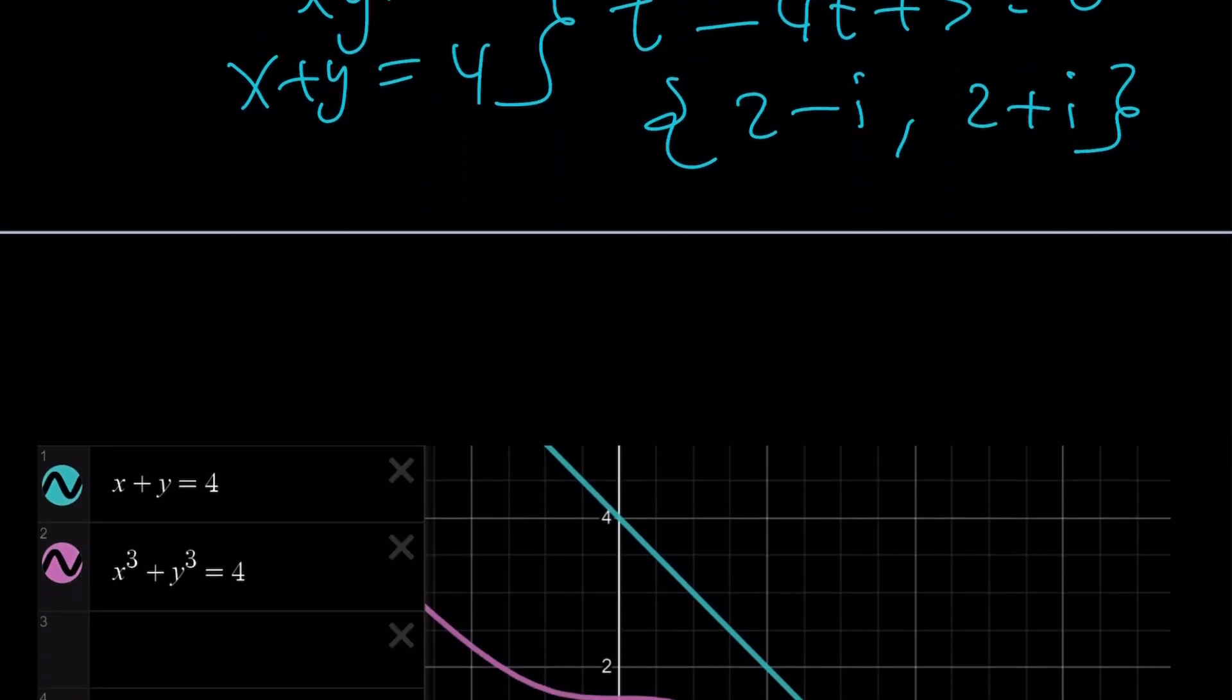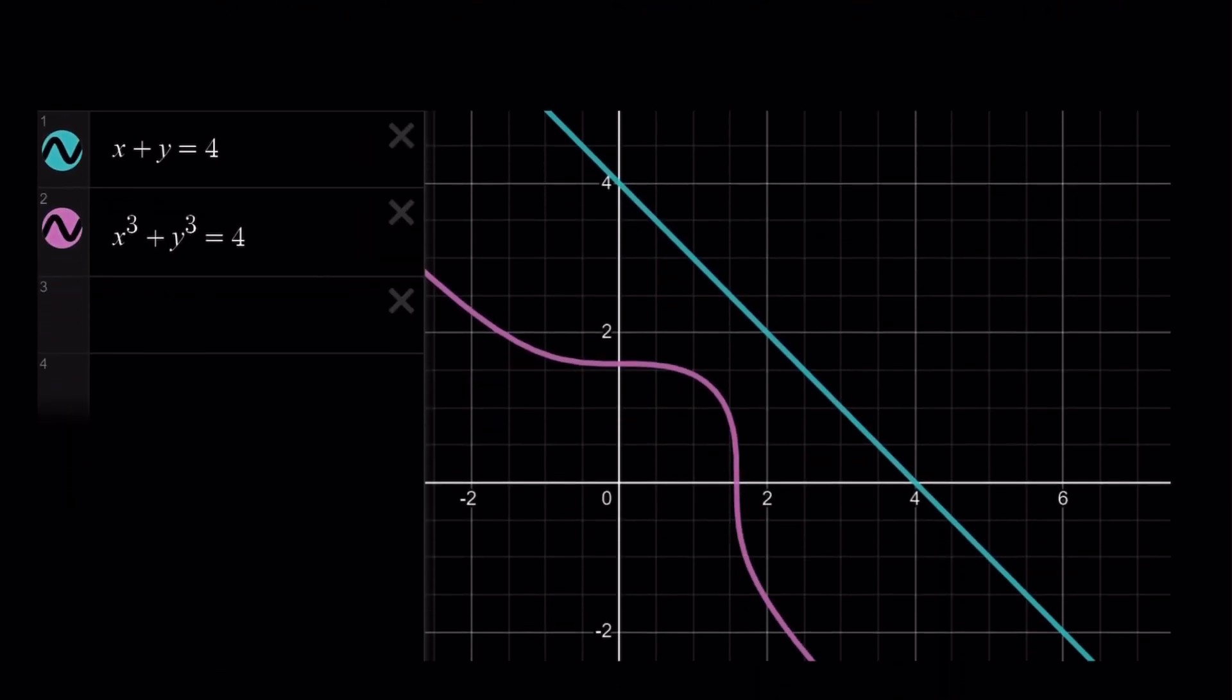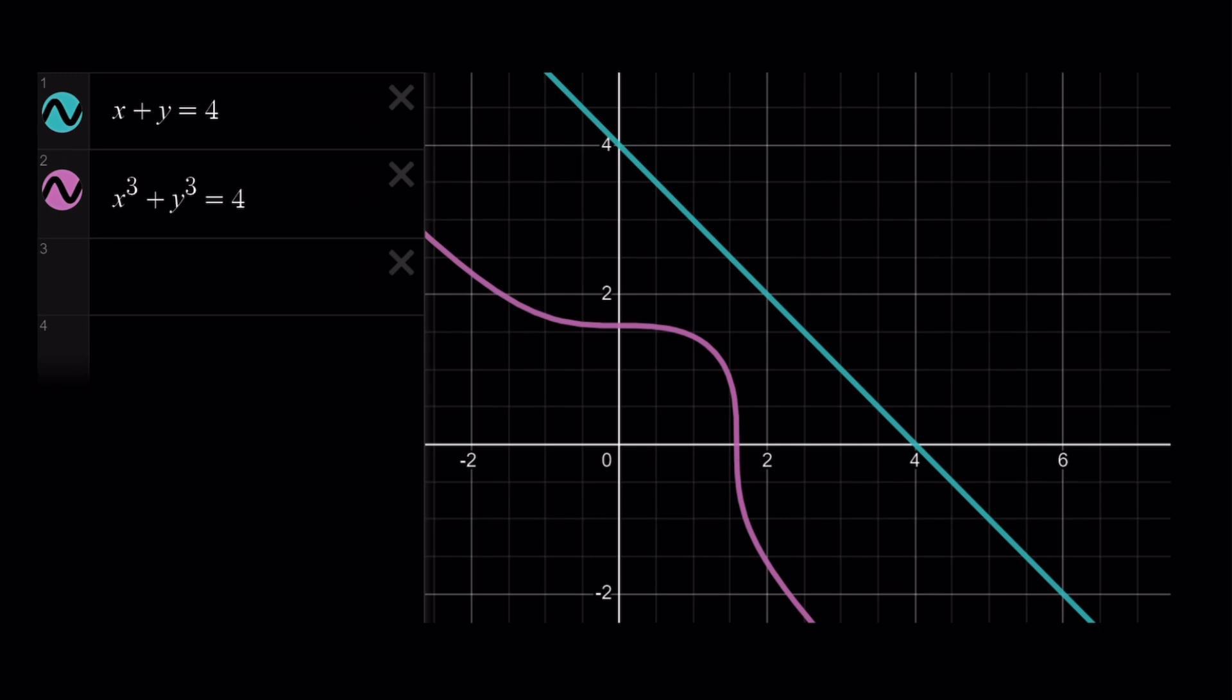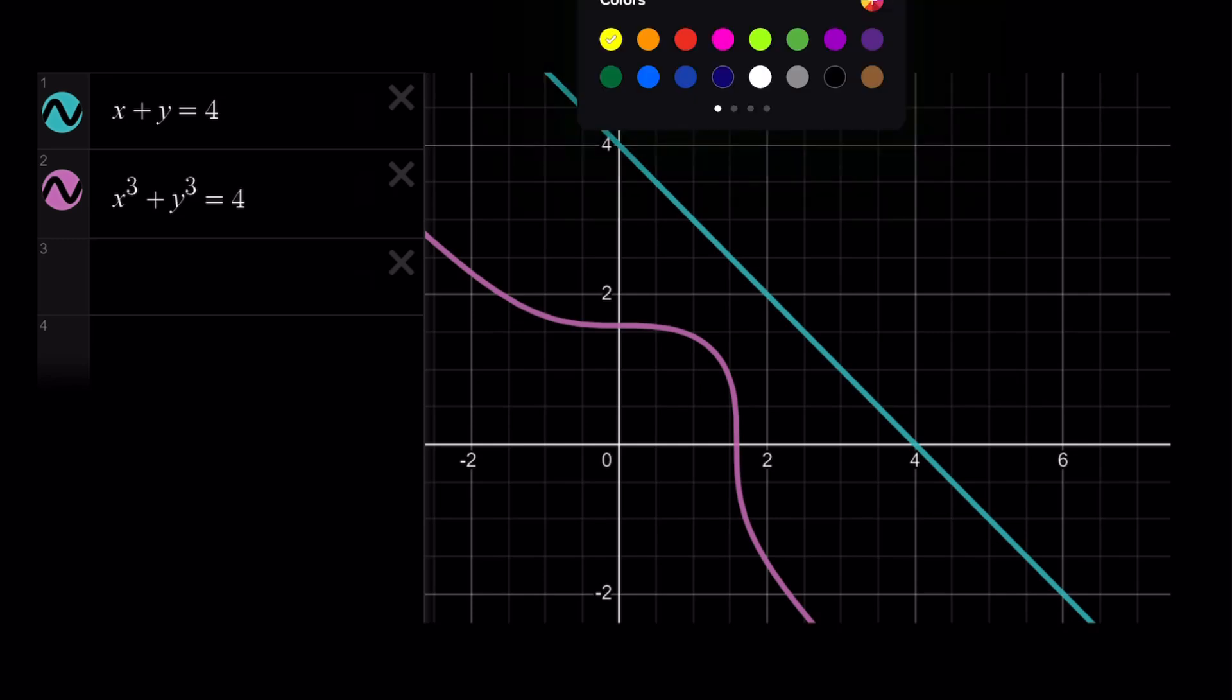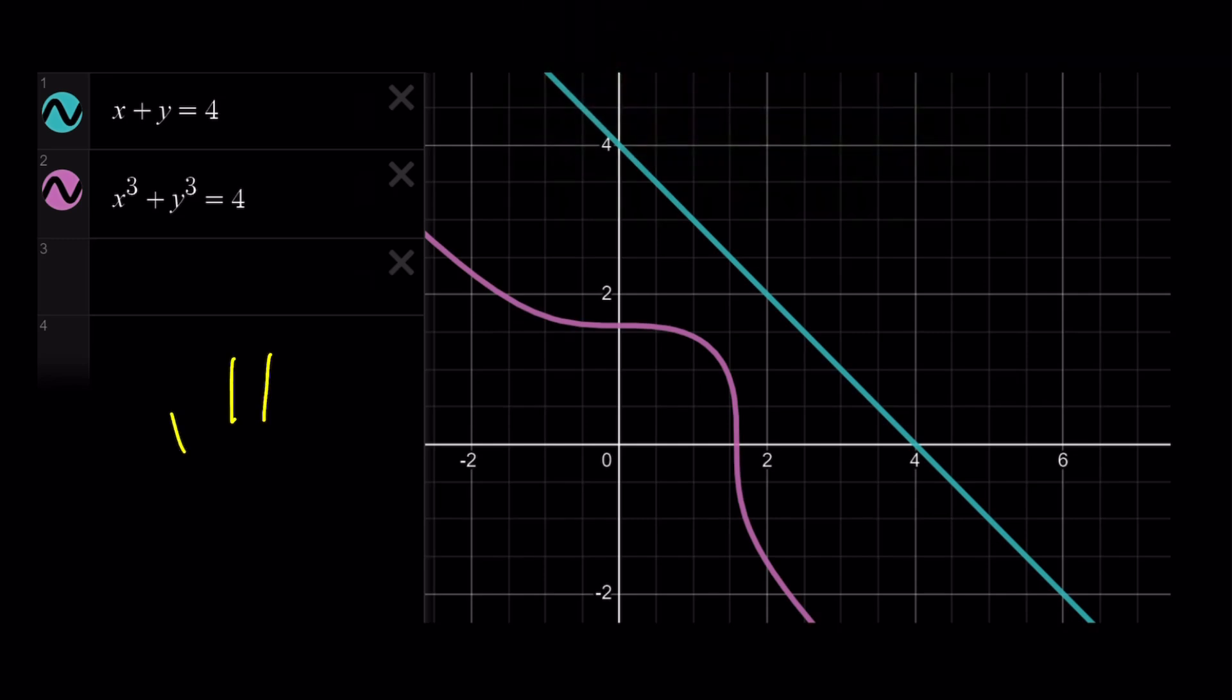And now, let's take a look at the graph of these two functions. Wait a minute. Are these functions or relations? They don't intersect because there are no real solutions. So this is the complex deal, not the real deal. And this brings us to the end of this video. Thank you for watching. I hope you enjoyed it. Please let me know. Don't forget to comment, like, and subscribe. I'll see you next time with another video. Until then, be safe. Take care and bye-bye.